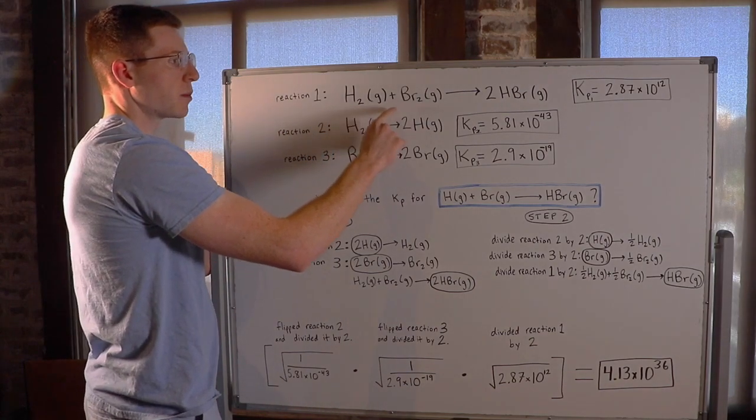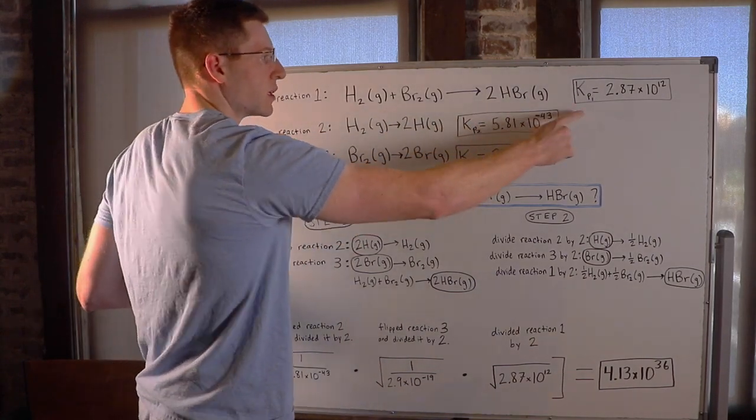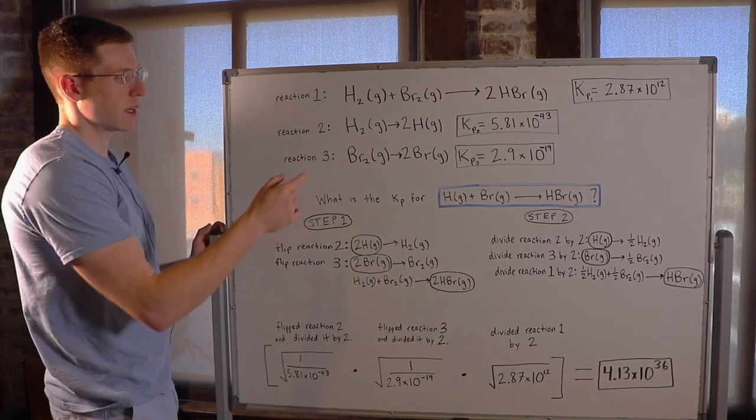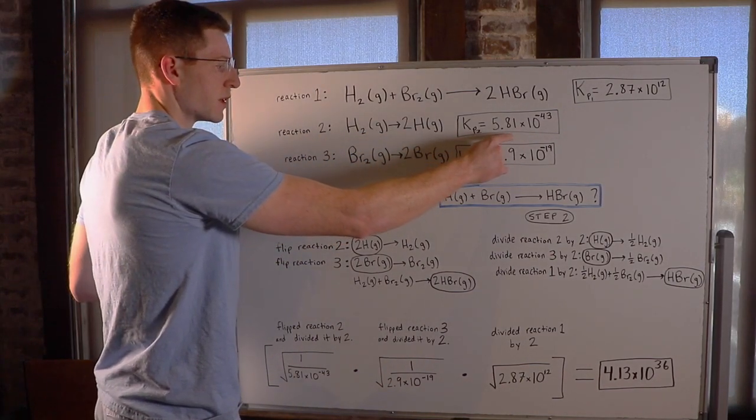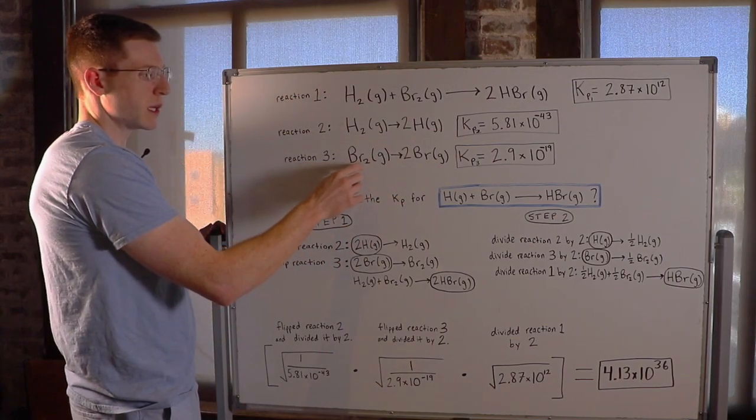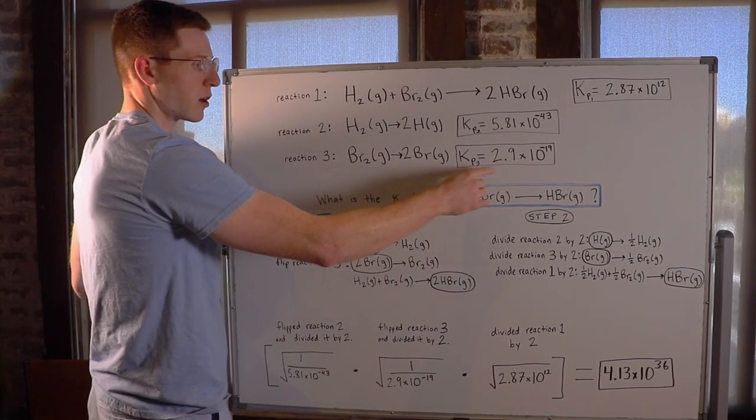Reaction 1 was H2 plus Br2 goes to 2HBr, and you're given the K for that reaction. Reaction 2 is H2 goes to 2H, and we have the K for this reaction. Reaction 3 was Br2 goes to 2Br, and we also have this K.